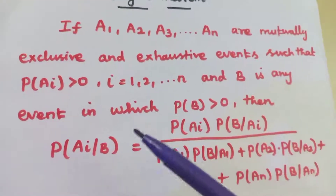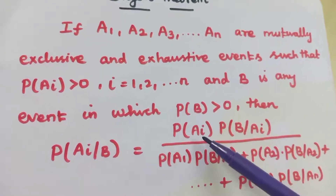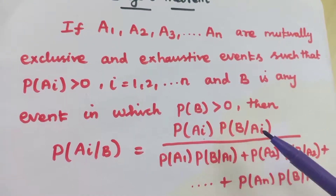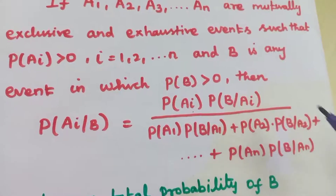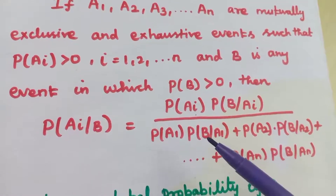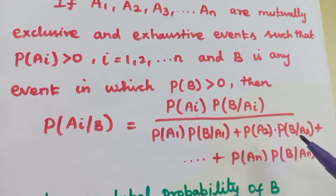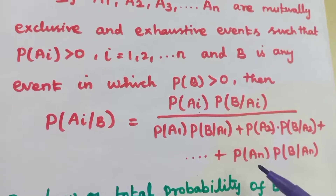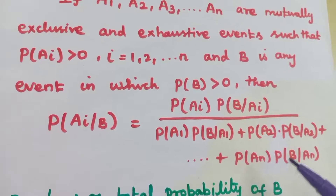Then probability of Ai over B is equal to probability of Ai into probability of B over Ai, divided by the total probability. That is P(A1) into P(B|A1) plus P(A2) into P(B|A2) plus etc., plus P(An) into P(B|An).